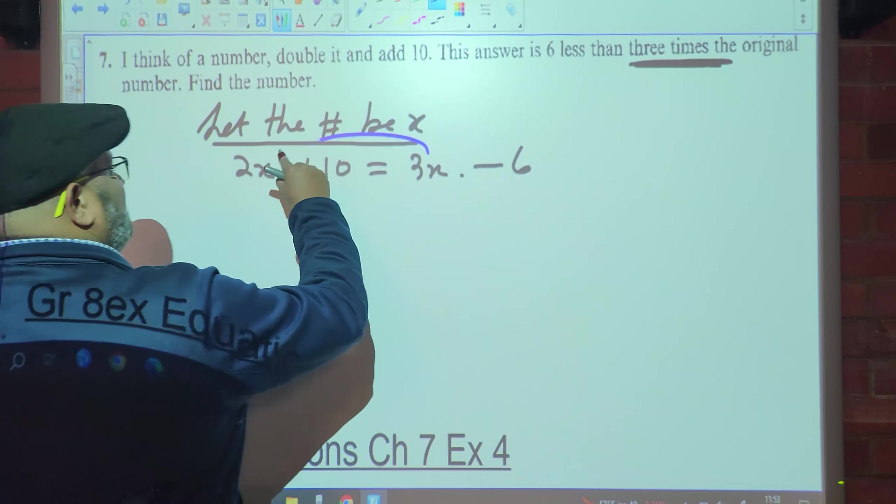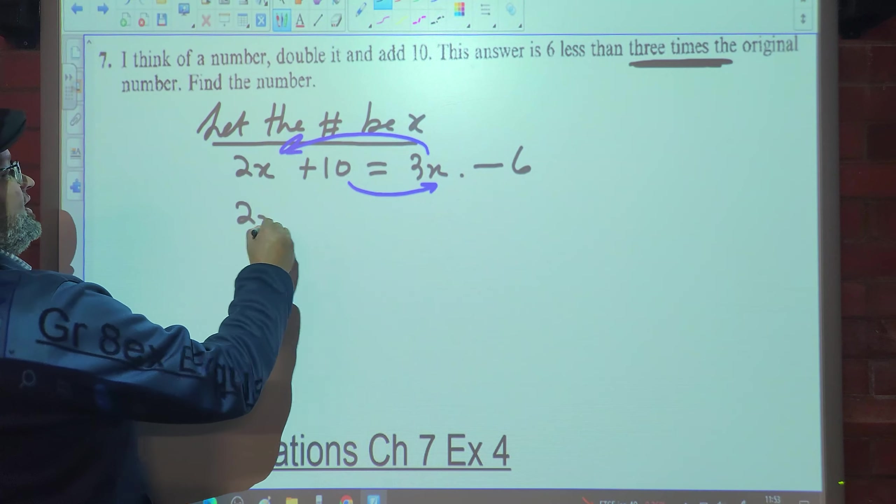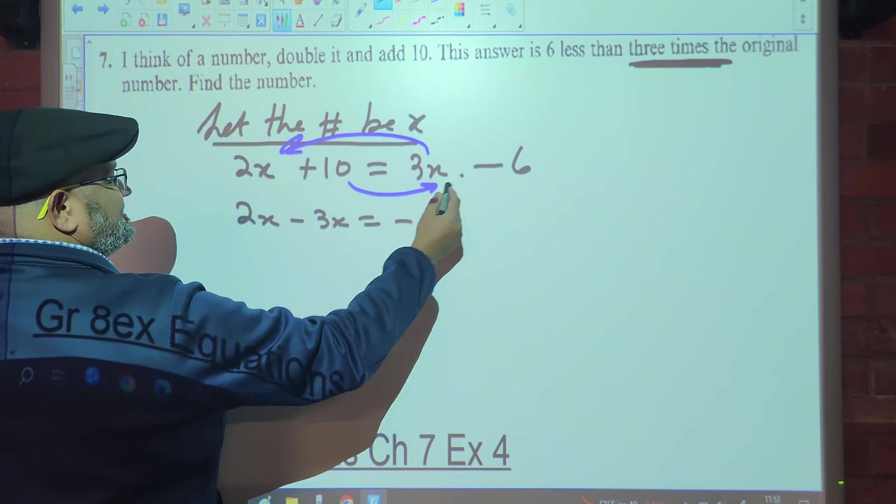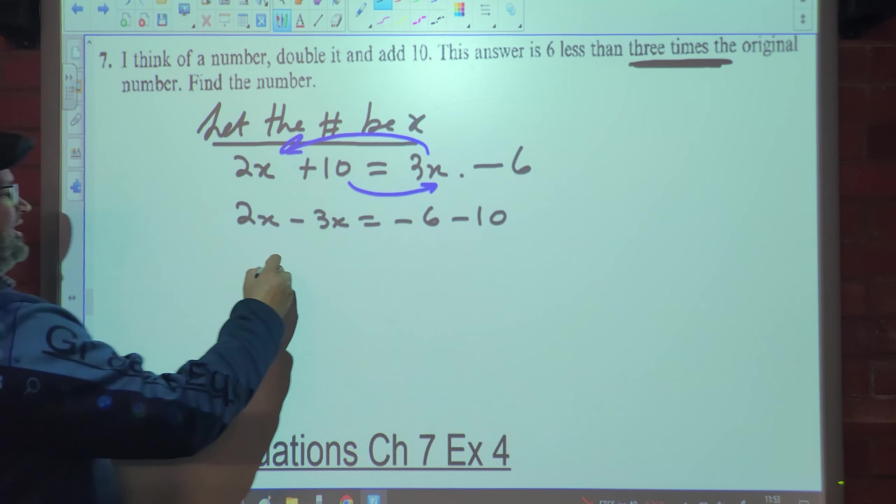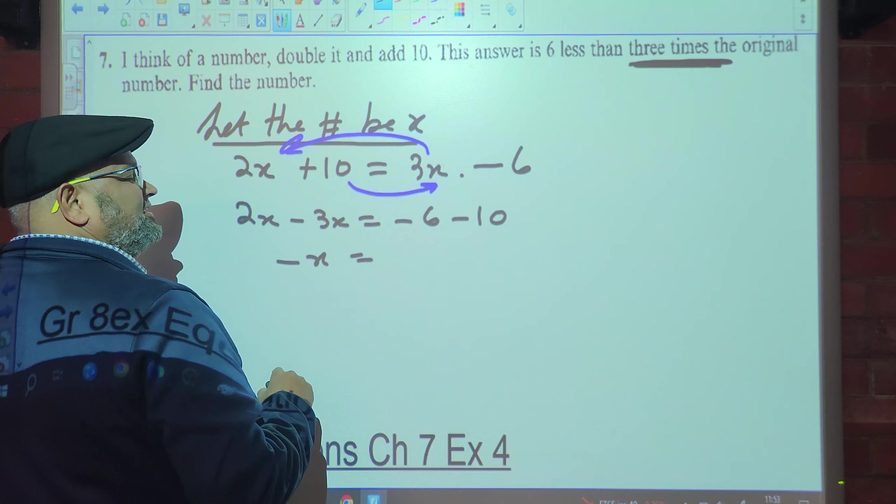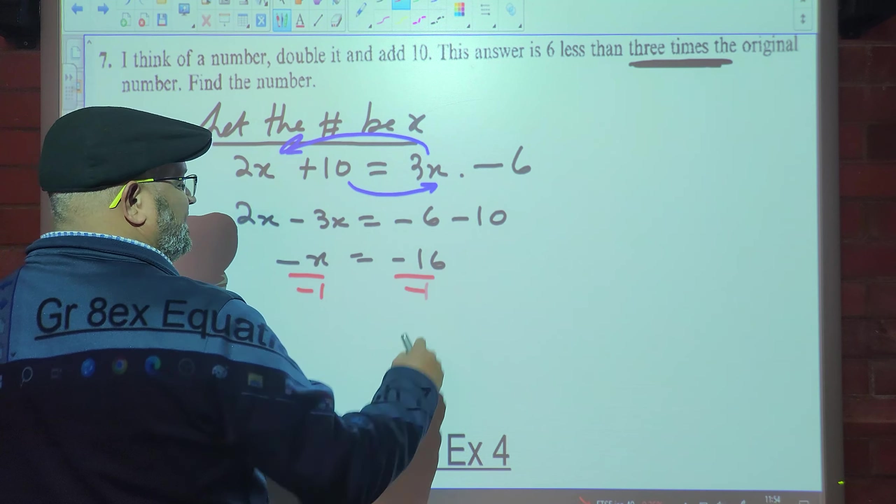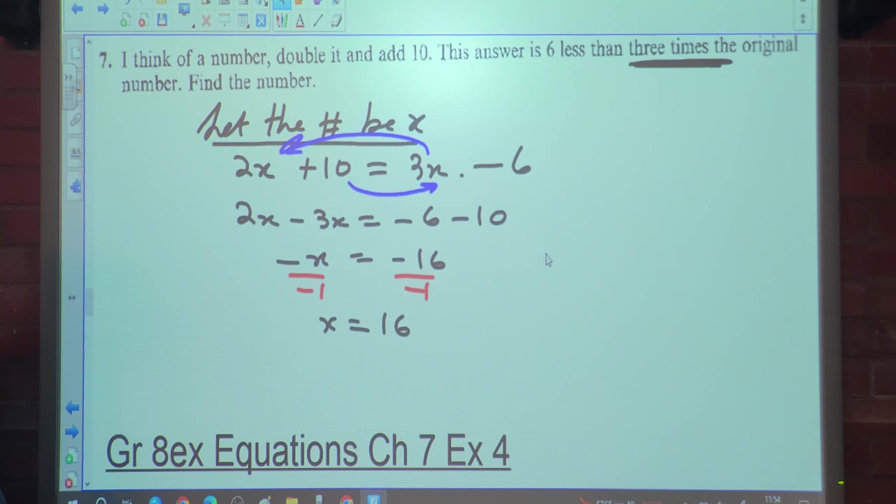So what do I do? x on one side, numbers on the other side. So what do I get? 2x minus 3x is equal to negative 6 minus 10. What is 2x minus 3x? Negative x is equal to negative 6 minus 10, negative 16. So I divide by negative 1 both sides, so x works out to be 16. Any confusion there?